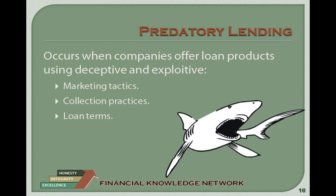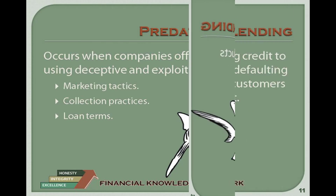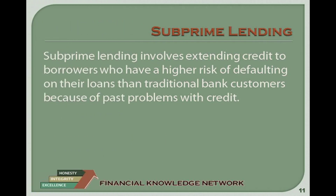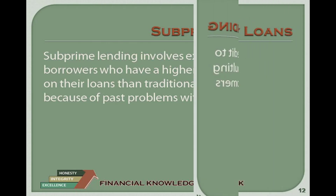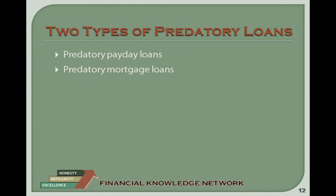Indicators of predatory mortgage lending: Excessive fees — points and fees are costs not directly reflected in interest rates. Because these costs can be financed, they are easy to disguise or downplay. On predatory loans, fees totaling more than 5% of the loan amount are common. Abusive prepayment penalties — borrowers with higher-interest subprime loans have a strong incentive to refinance as soon as their credit improves. However, most subprime mortgages carry a prepayment penalty — a fee for paying off a loan early. Be careful of prepayment penalties that last more than 3 years and/or cost more than 6 months' interest. Kickbacks to brokers — yield spread premiums: when brokers deliver a loan with an inflated interest rate higher than the rate acceptable to the lender, the lender often pays the broker a fee known as a Yield Spread Premium. This makes the loan more costly to the borrower. You can avoid this by shopping around for the best rate.